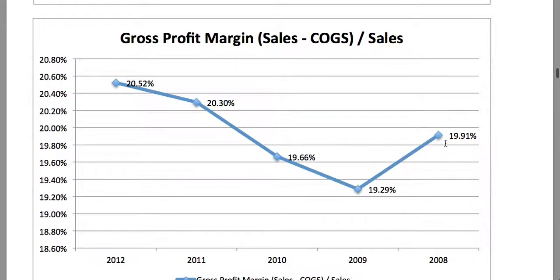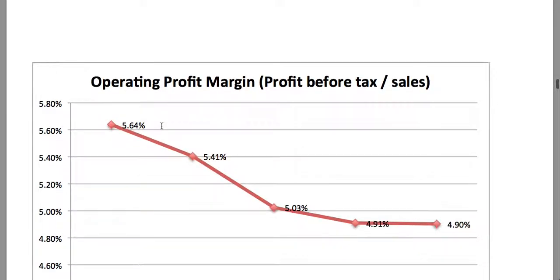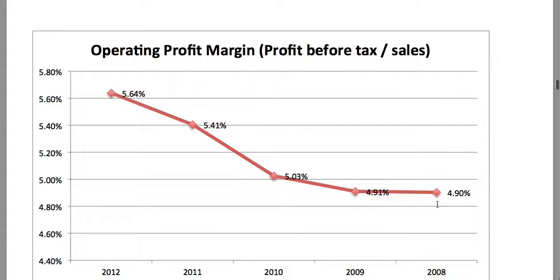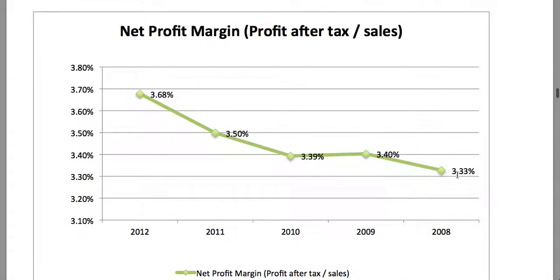Moving over to the margin positions, very similar to my previous video on the Foshini Group, we see a drop in gross profit margin from 2008 to 2009 and then a steady growth up to 20.52 percent. The operating profit margin has improved from 4.9 percent in 2008 to 5.64 percent in 2012. The net profit margin also improved somewhat from 3.33 percent in 2008 to 3.68 percent in 2012.